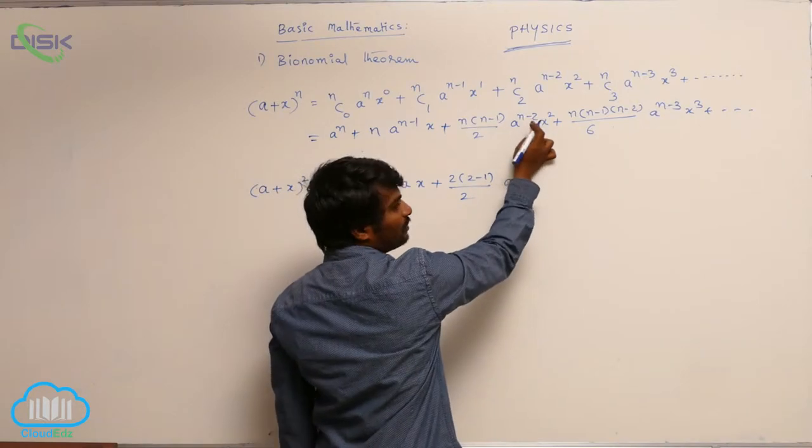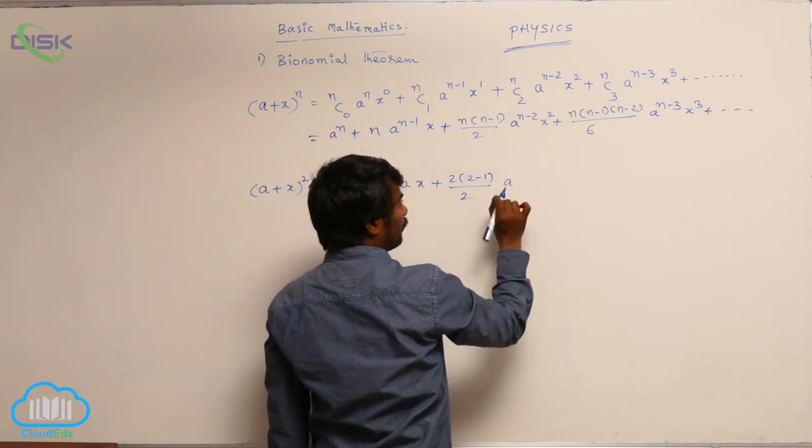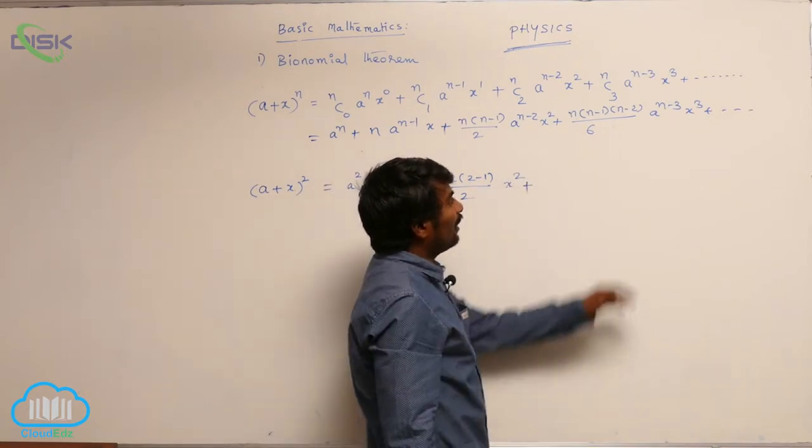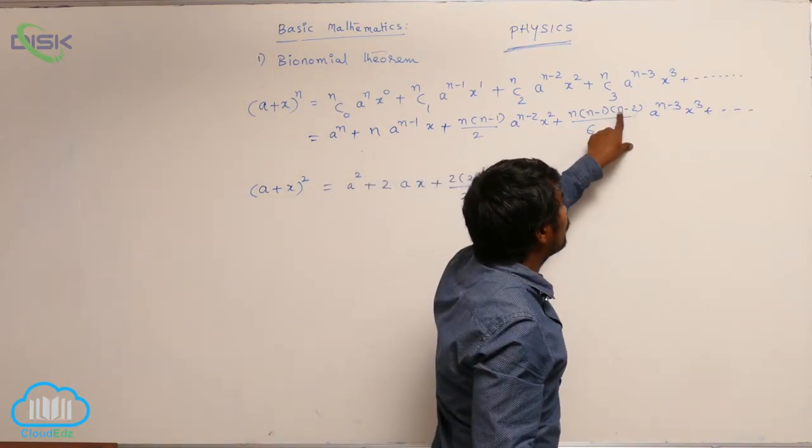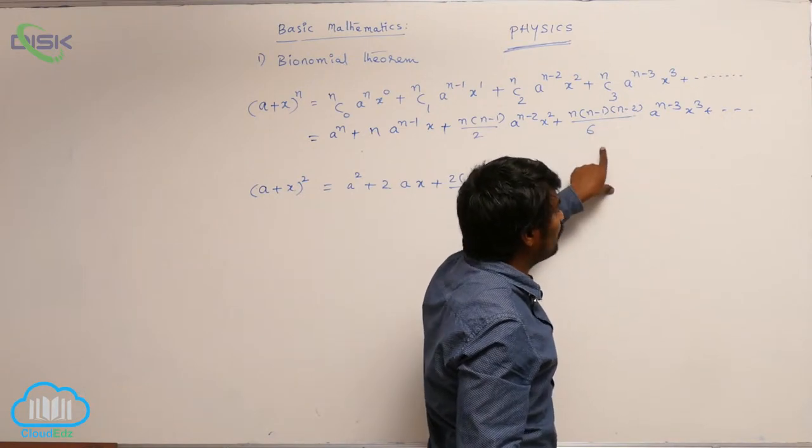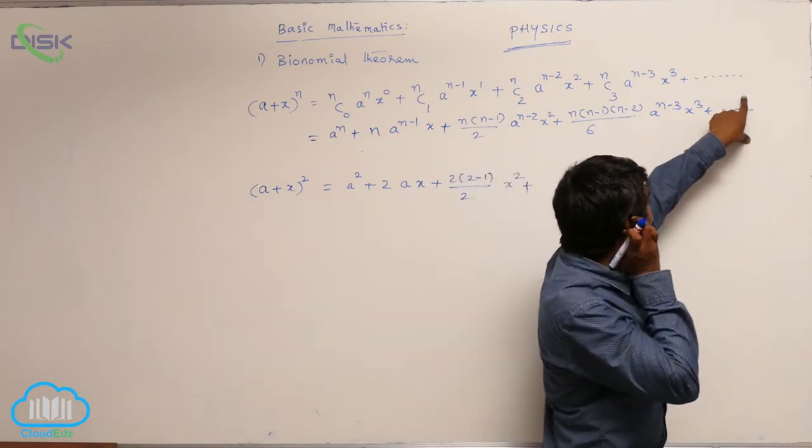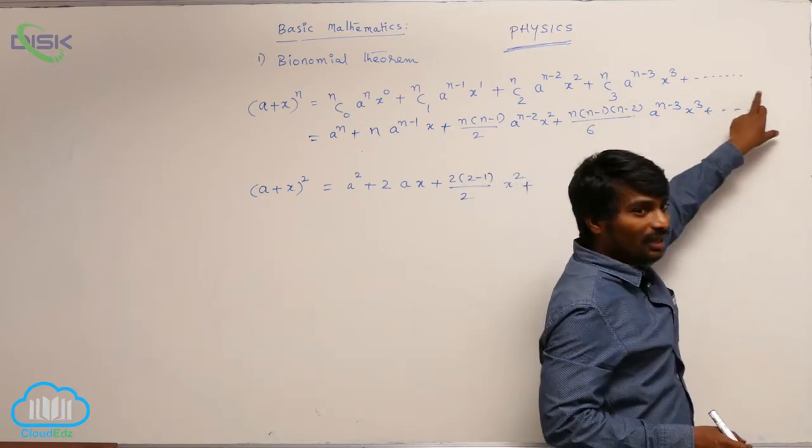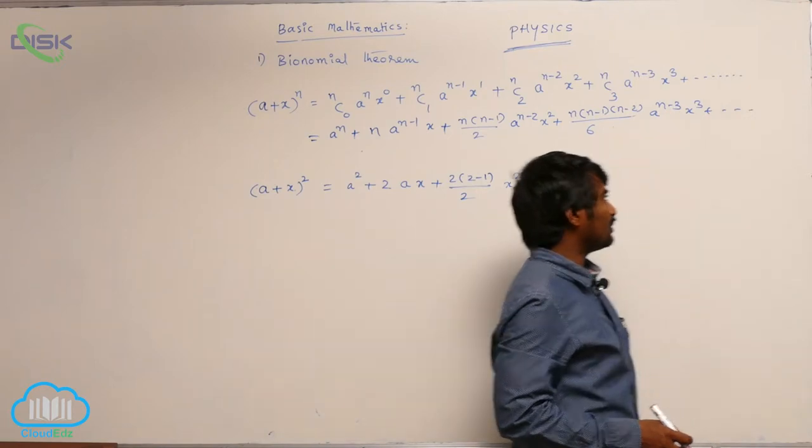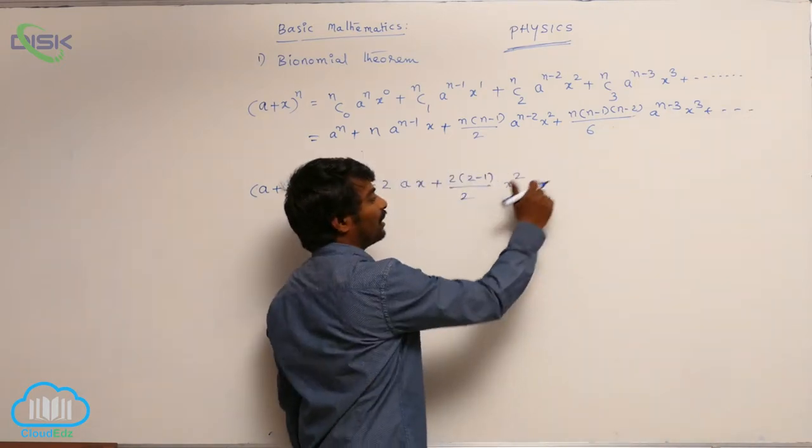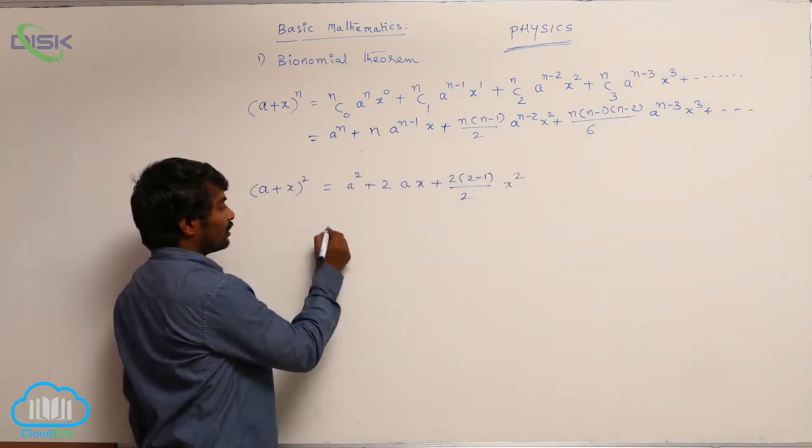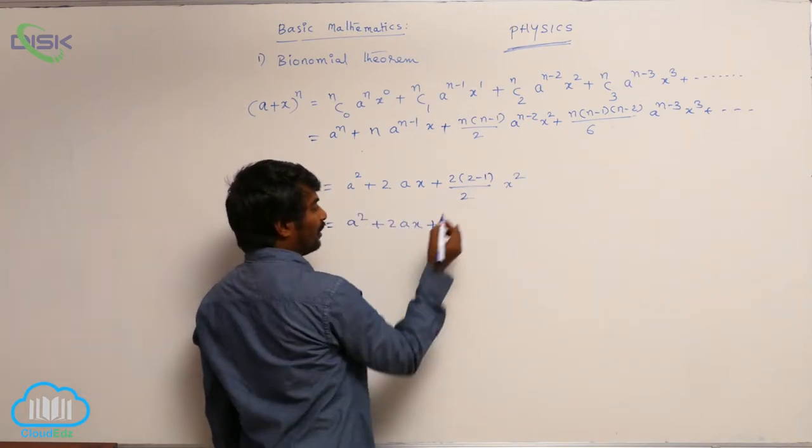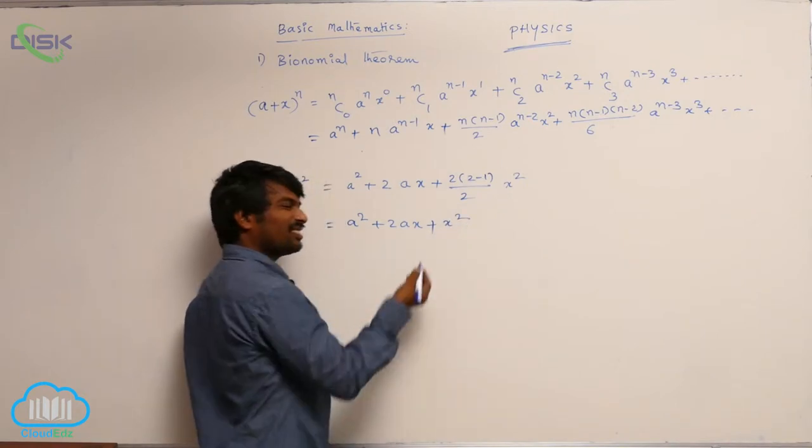a^(2-2) is a^0, which is 1 times x^2. Plus here the (n-2) term you are having. So 2 minus 2 will be 0. Again in the next expression you will be getting n(n-1)(n-2)(n-3), which also becomes 0. That is why you do not get any other terms. So it is a^2 + 2ax + x^2. This is the formula you know.